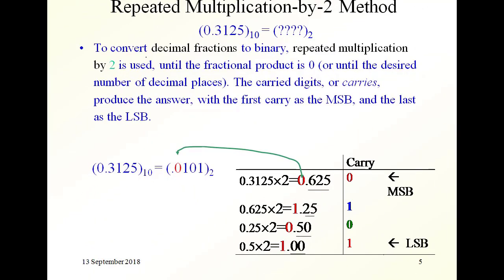To convert decimal fractions to binary, we use repeated multiplication by 2. Suppose we want to convert this decimal number into binary. We multiply the number and we have an answer, and this here — 0 — is the carry. This carry goes to the most significant bit after the binary point. Then we take this number, 0.625, and multiply it by 2.